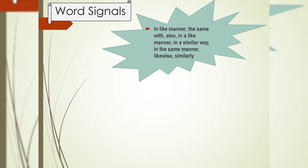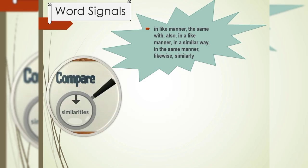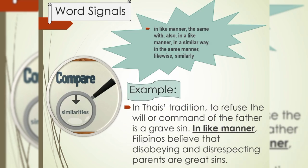Comparing is showing the similarities of two things or ideas with the use of appropriate transition signals. These are the word signals: In like manner, The same with, Also, In a like manner, In a similar way, In a same manner, Likewise, and similarly. Example: In Thai's tradition, to refuse the will or command of the father as a grave sin. In like manner, Filipinos believe that disobeying and disrespecting parents are great sins.